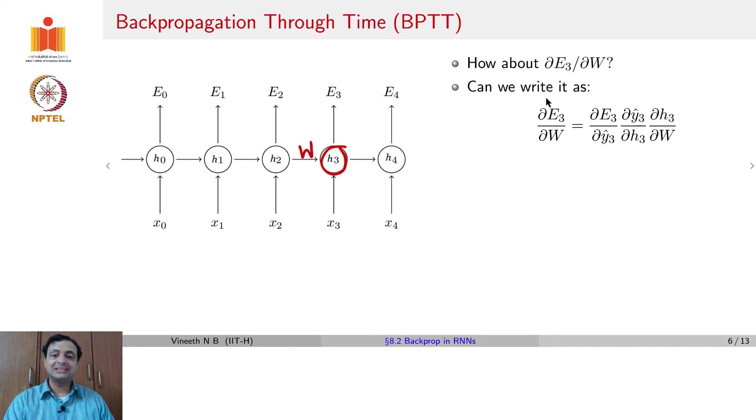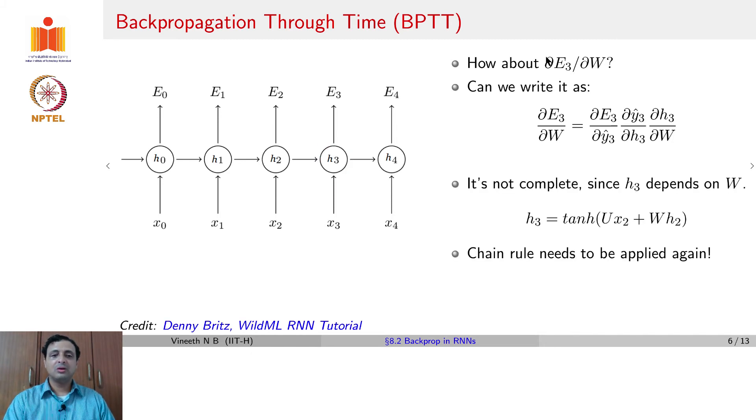The question now is, is this good enough? If we now took this quantity and summed up ∂E_3/∂W plus ∂E_2/∂W and so on, would we have solved ∂E_3/∂W overall? Unfortunately, no. Because while ∂H_3 depends on W, ∂H_3 also depends on H_2, which in turn depends on W again, which means chain rule needs to be applied again to be able to complete this computation of ∂E_3/∂W.